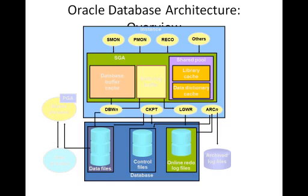Other memory structures include DBWN, the Database Writer process, which is responsible for writing to the database files. There is a Checkpoint process used for keeping sync between control files, data files, and redo log files — checkpointing is done when the transaction commits. There is also a Log Writer process, which writes to the log file. Finally, there is the Archiver process, which is not mandatory and runs only when the database is in archive log mode, archiving the log files to archive log files.